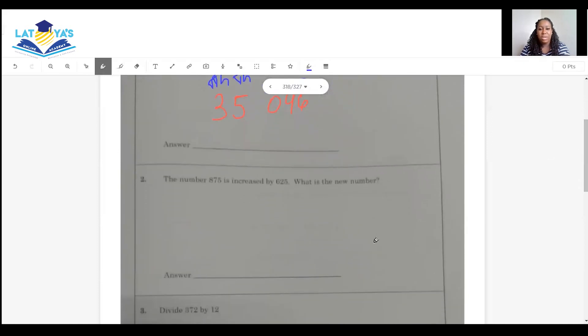The number 875 is increased by 625. What is the new number? 875 is increased by 625. They just want us to add here. Another good one. 875 plus 625. 5 plus 5 is 10. 7 plus 2 is 9 and one outside is also 10. 8 plus 6 and 1 is going to give me 15. The answer is 1500.